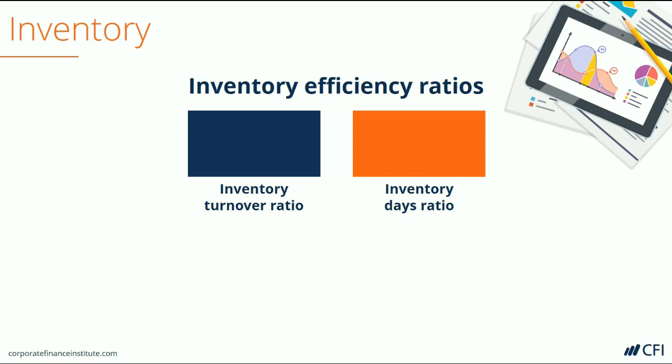The Inventory Turnover Ratio is calculated by taking the Cost of Sales or Cost of Goods Sold and dividing it by either the Ending Inventory Balance or the Average Inventory Balance over the period. Using either is acceptable — it's just important to remain consistent in the way you calculate it throughout all your analysis.